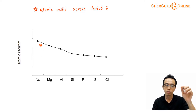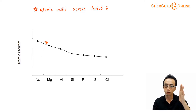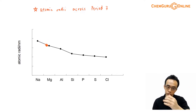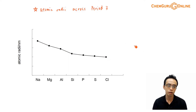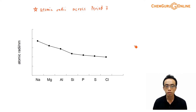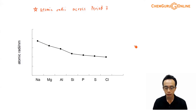Sodium has the biggest atomic radius, and in general you'll notice it decreases as we move across period 3. We want to run through what concept we can use to explain the atomic radii across period 3 elements.